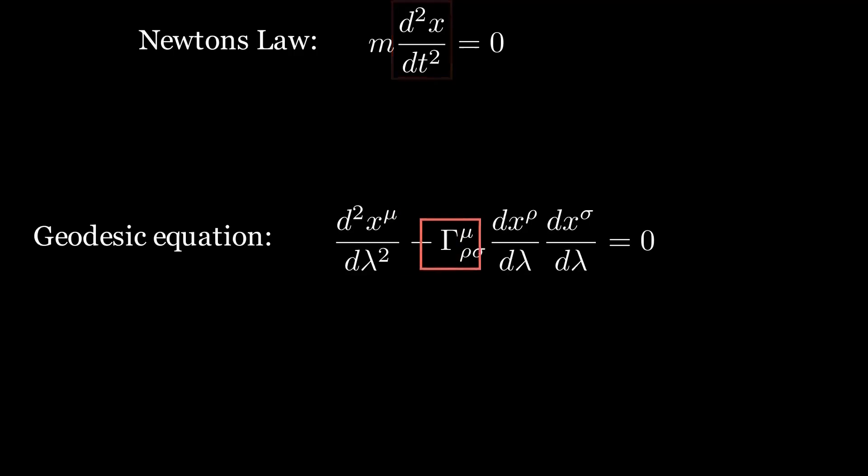We first need to know what this capital gamma term is. These are the Christoffel symbols. It is an array of numbers that tell you how your basis vectors are changing. It allows us to define the concept of parallel transport.